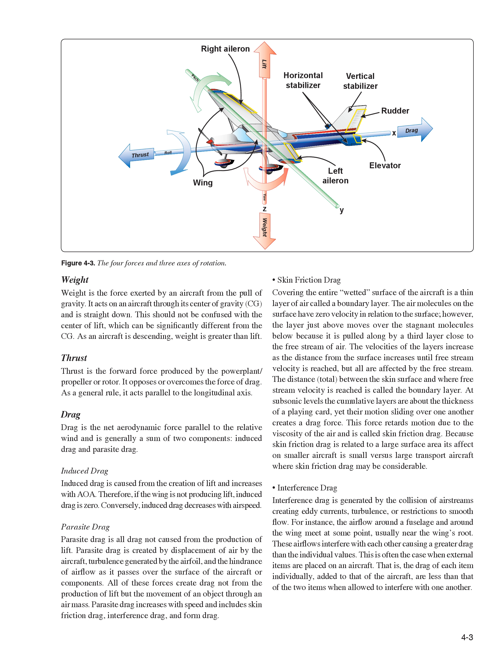Thrust is the forward force produced by the power plant/propeller or rotor. It opposes or overcomes the force of drag. As a general rule, it acts parallel to the longitudinal axis. Drag is the net aerodynamic force parallel to the relative wind and is generally a sum of two components: induced drag and parasite drag. Induced drag is caused from the creation of lift and increases with AOA. Therefore, if the wing is not producing lift, induced drag is zero. Conversely, induced drag decreases with airspeed.